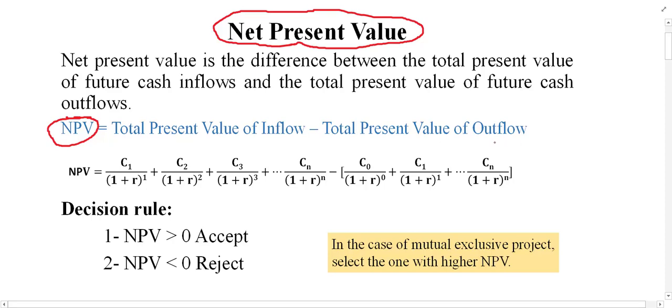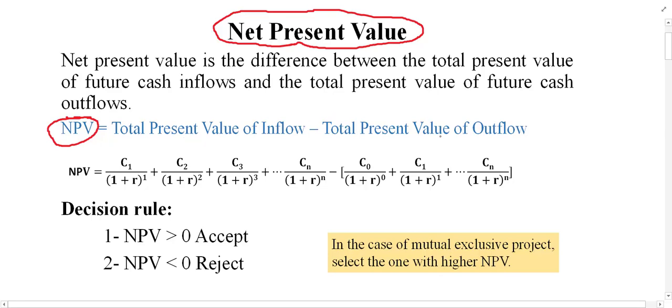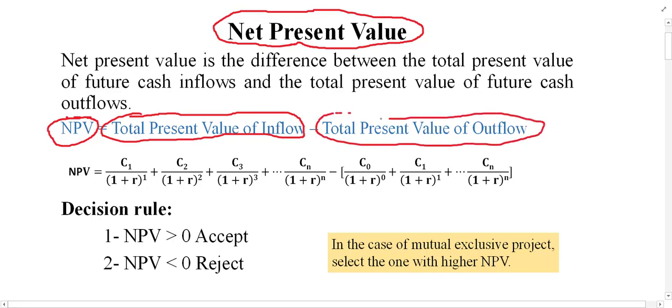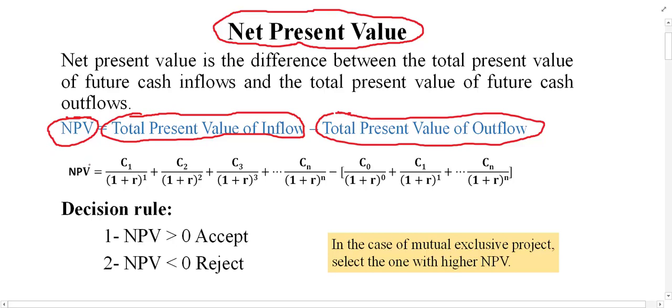First, you have to take the present value of all inflows from the project — the revenue you receive. Suppose you receive inflow for year one, year two, year three, year four, and so on. After that, take the present value of all outflows, then subtract the present value of outflows from the present value of inflows. The result is the NPV, which can be a positive or negative amount.